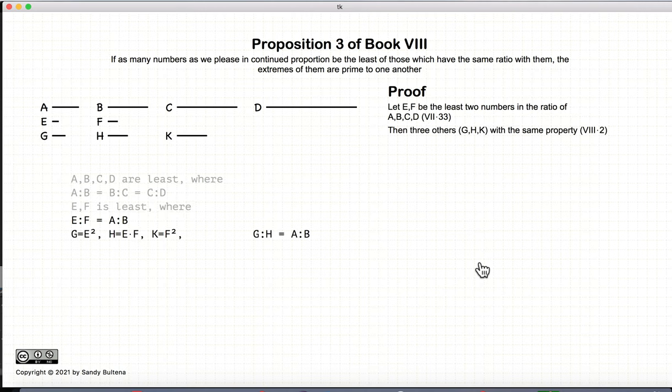And now what we do is we use the methods that we used in Proposition 2 of this book, and we will construct a series of four numbers that are the least in the ratio of E to F.